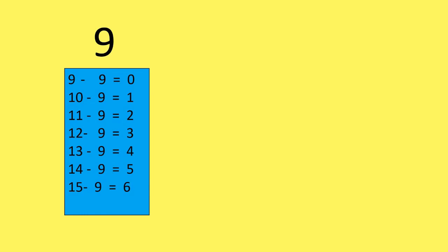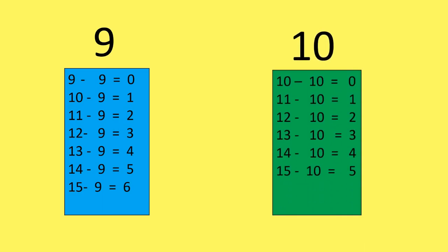Now the Subtraction Table of 10. 10 minus 10 is equal to 0. 11 minus 10 is equal to 1. 12 minus 10 is equal to 2. 13 minus 10 is equal to 3. 14 minus 10 is equal to 4. 15 minus 10 is equal to 5.